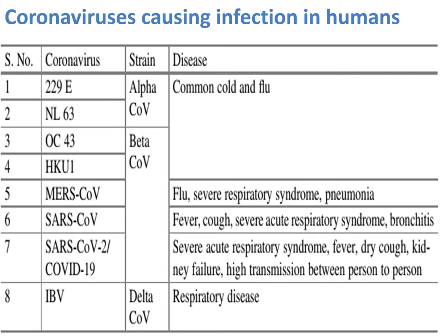These are the coronaviruses that cause infection in humans: 229E, NL63, OC43, HKU1, MERS, SARS, and COVID-19, as well as IBV. The first four — 229E, NL63, OC43, and HKU1 — can cause common cold and flu. Indeed, one third of common colds are due to these organisms, with the remainder mainly due to rhinovirus.